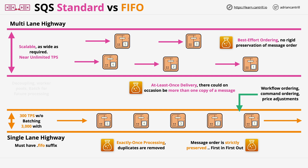Standard queues are ideal for decoupling application components, for worker pool architectures, or to batch together items for future processing. Those are the ideal use cases for standard SQS queues. That's everything for this lesson — I wanted to make sure you understand the architectural differences between these two queue types for the exam. Thanks for watching, and I look forward to seeing you in the next lesson.